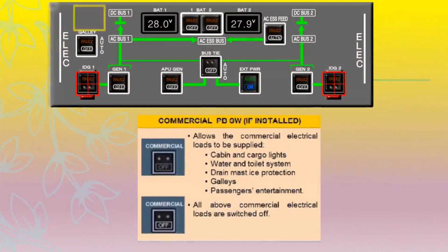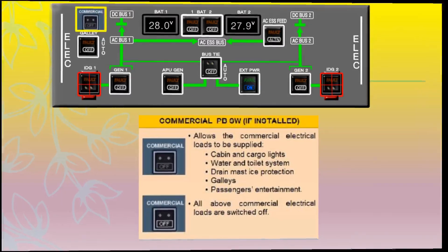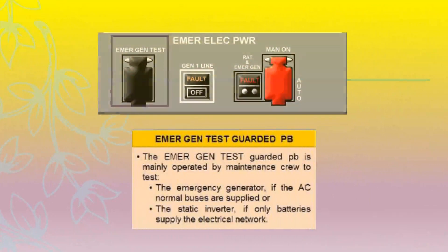The optional commercial pushbutton, if installed, allows commercial electrical loads to be supplied, such as the cabin and cargo lights, water and toilet system, drain mast ice protection, galleys, and passenger entertainment. When the off light illuminates, it indicates all above commercial electrical loads are switched off.